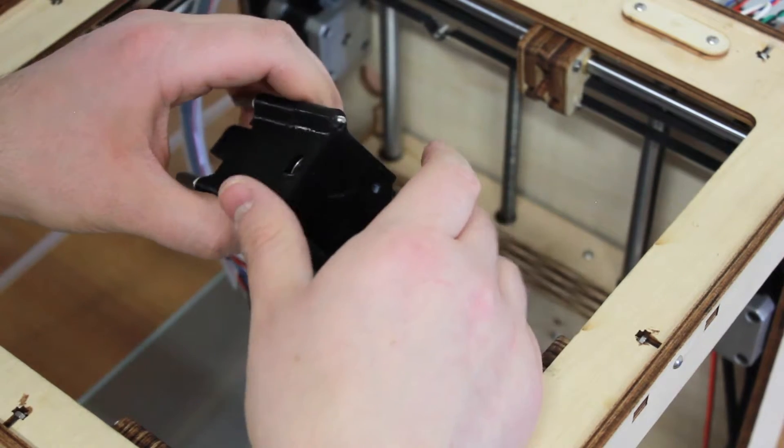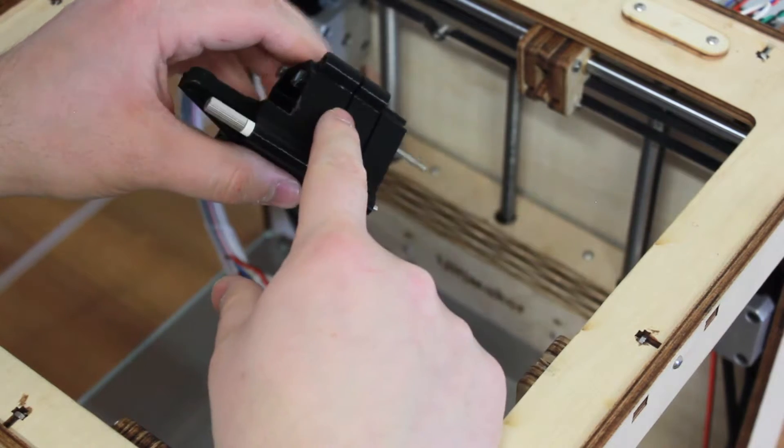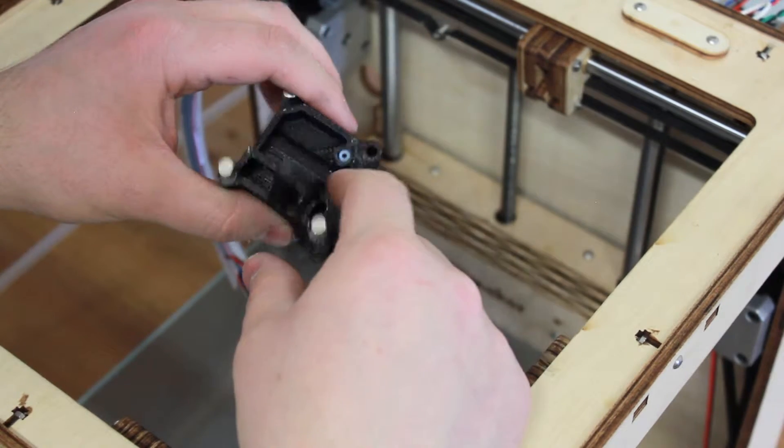So after you do that, you are ready to re-put the rods and put the extruder itself on the carriage.